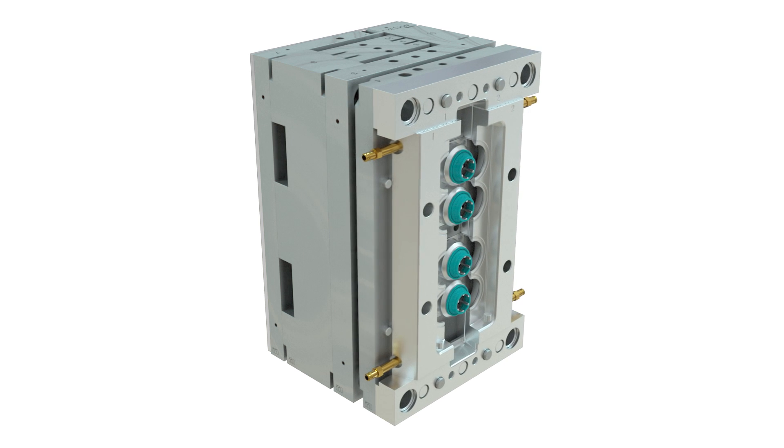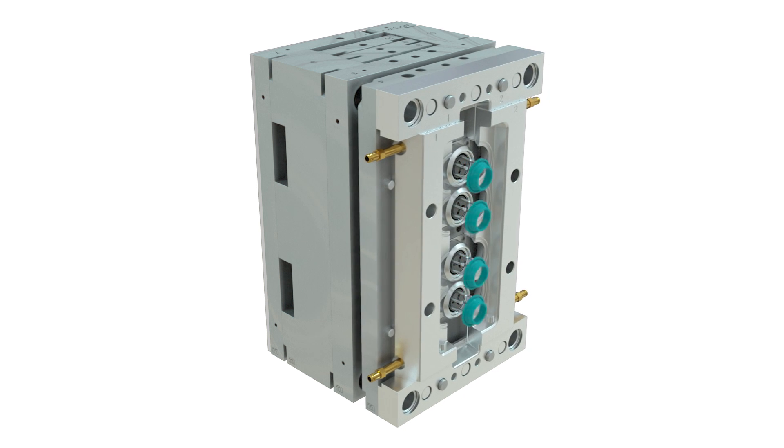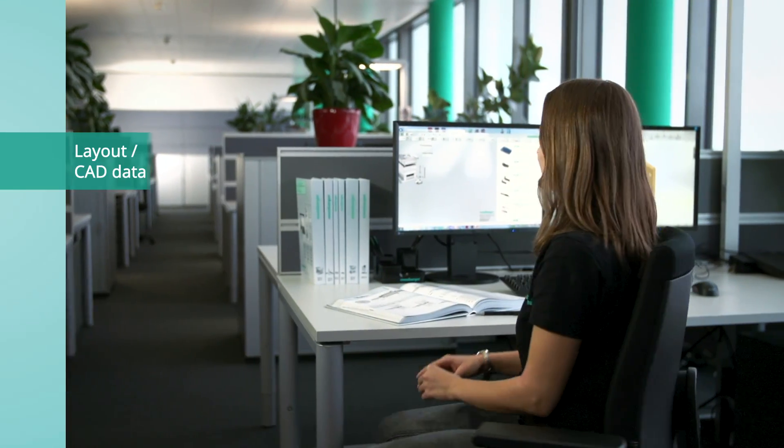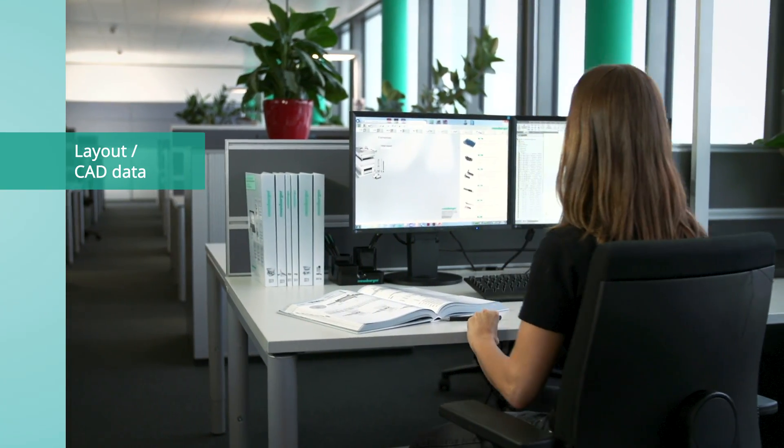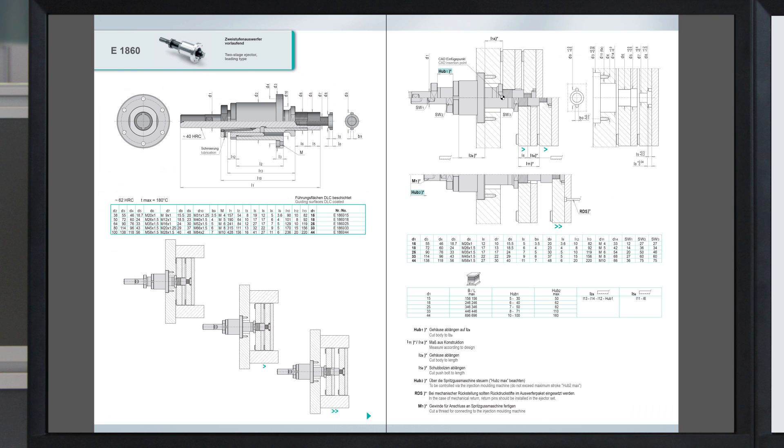The front ejector set moves further to the end position and the part is ejected. The tables in the catalogue help select the right size, based on the specified strokes and maximum permissible mould sizes.